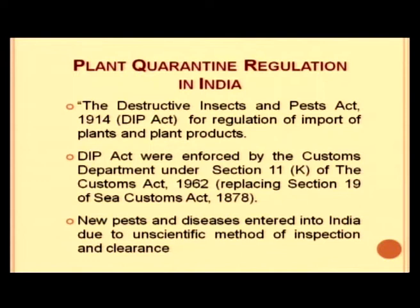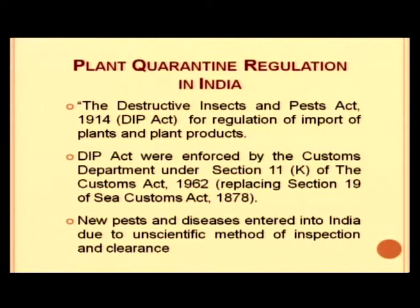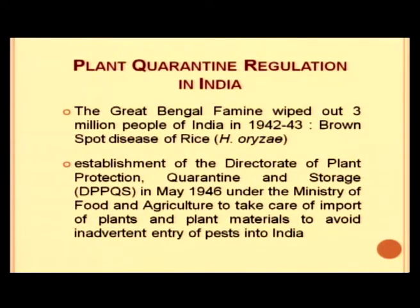Plant quarantine regulation in India started with the Destructive Insects and Pests Act 1914 (DIP Act), which was the first act for regulation of import of plants and plant products. Before the establishment of the Directorate of Plant Protection Quarantine and Storage (DPPQS), the DIP Act was enforced by the customs department. However, their methods of inspection and clearance were very unscientific, allowing new pests and diseases to enter India.